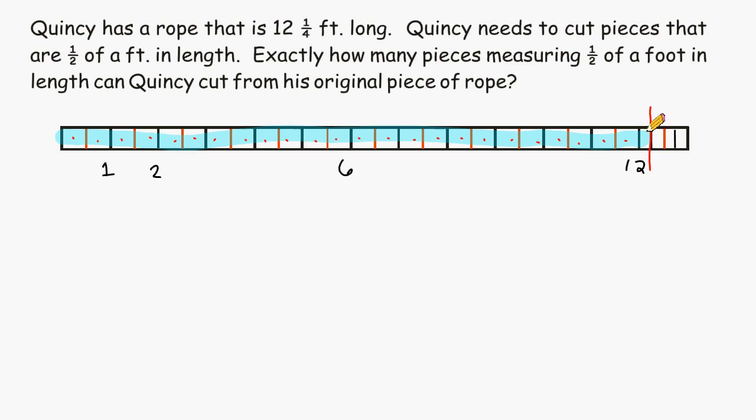And this little piece right here is only one-quarter, but the pieces that we are trying to cut off have to be one-half of a foot in length. So we cannot use this piece because the problem says that we need pieces that are exactly one-half of a foot. So we would say that we could get twenty-four pieces that are equal in length to one-half of a foot out of a piece that is twelve and one-quarter feet in length.